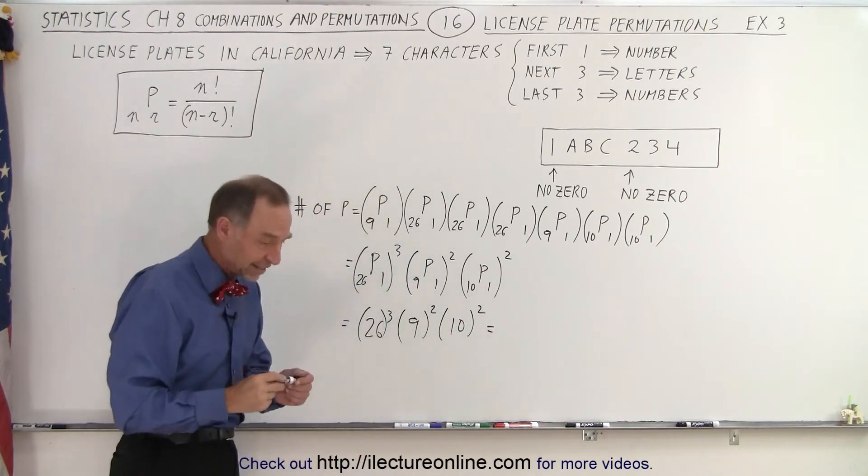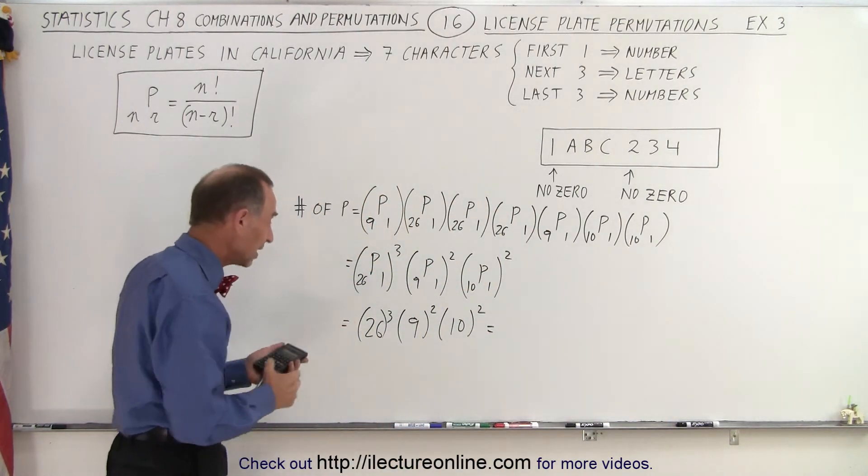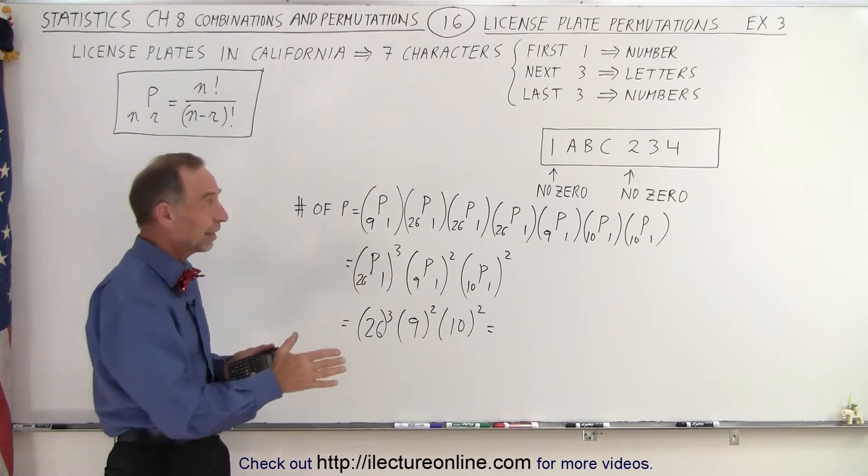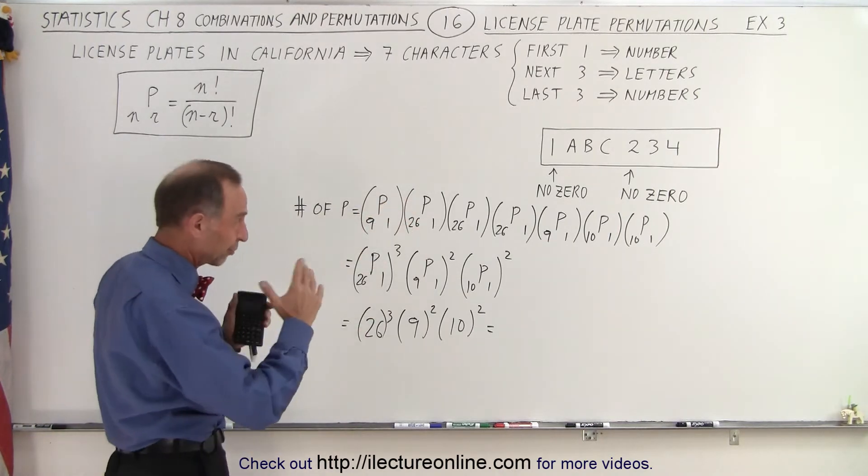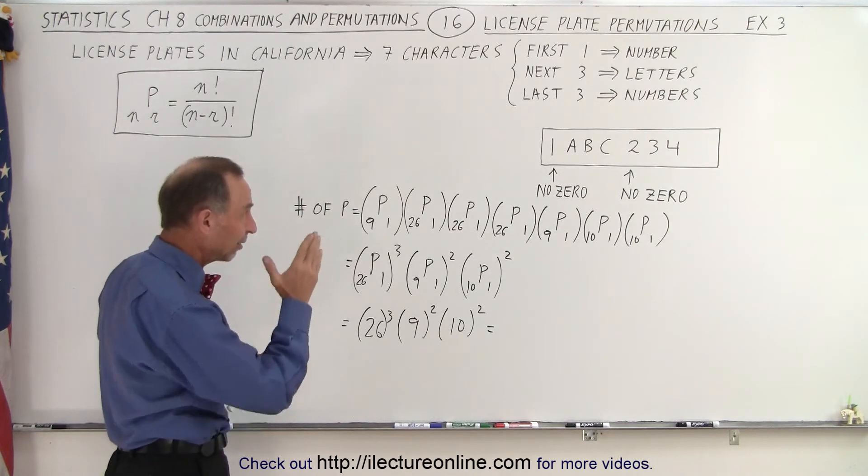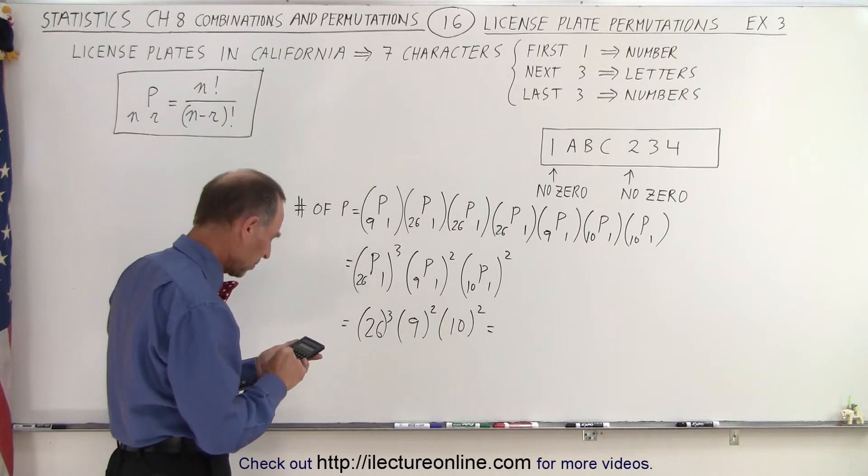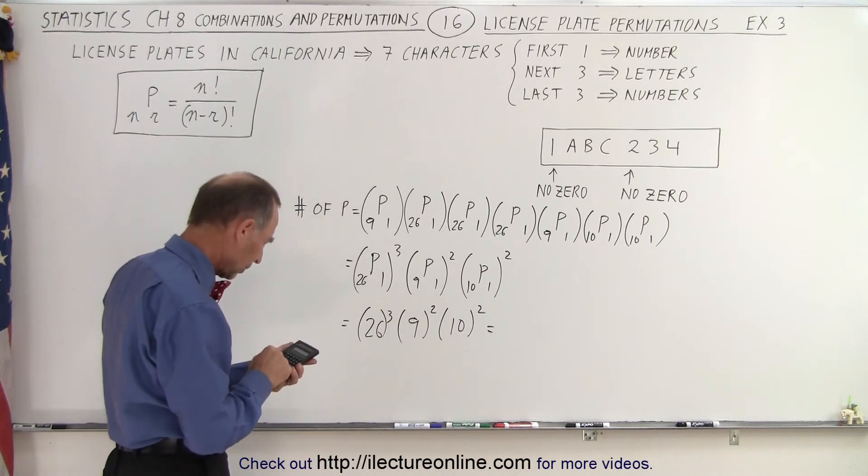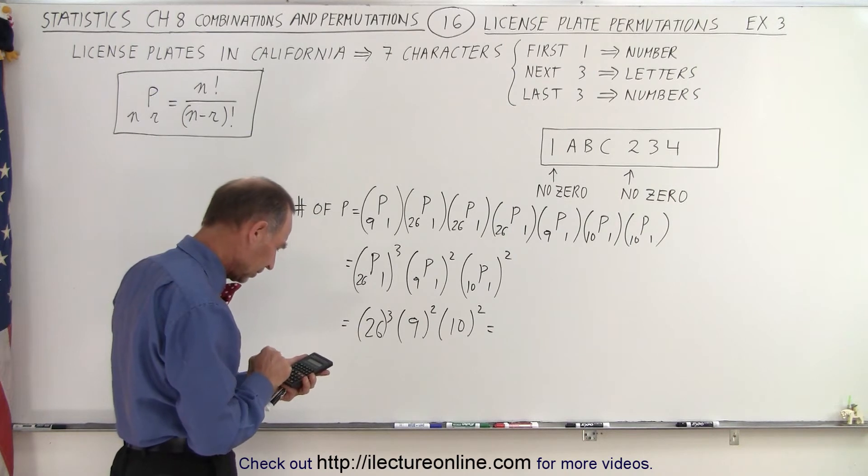So how many different permutations are there for license plates in California using the scheme that's been good for a long time now? In the older days, there were only six characters on the license plate, and of course, in the very old days, fewer than that. But that has been kind of the standard probably for the last 30, 40 years or so, if I remember right. So that gives us 26 raised to the third power, times 9 squared, which is 81, times 10 squared, which is 100.